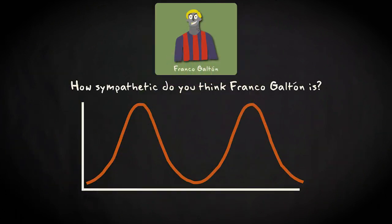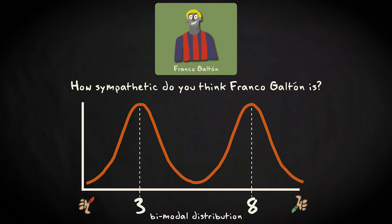Let's say that this is the shape of the histogram resulting from your study. You can see that the Spanish population is strongly divided. Some find Galton very unsympathetic, and some find them very sympathetic. As you can see, the distribution has two modes, three and eight. This is clearly a bimodal distribution.